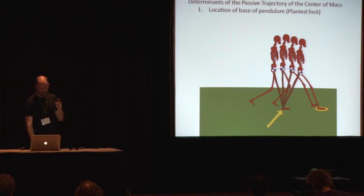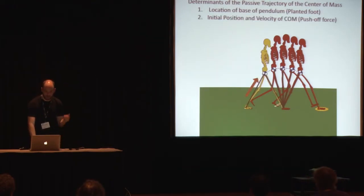There are two things that determine that trajectory. There's the location of the planking foot and there's the initial position and velocity of the center of mass relative to that planking foot.